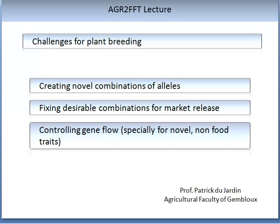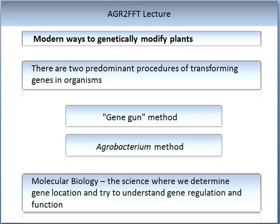Let us look in more detail at some of the modern ways to genetically modify plants. There are two predominant procedures for transforming genes in organisms. First is the gene-gun method, where the gene or genes of interest are shot into the plant. The second is the agrobacterium method, where we rely on a disease-based process to insert the traits of interest. Molecular biology is the science where we determine the gene location and try to understand gene regulation and function. Please note, genetically engineered crops or GMOs will be covered in another suite of lectures that will follow this — we will not talk about them here.